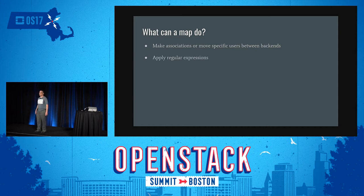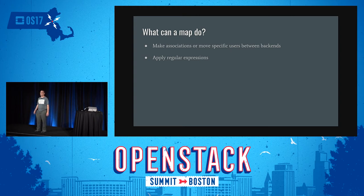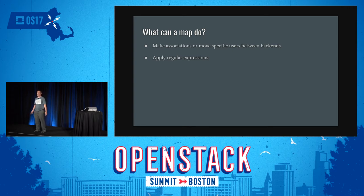The next thing a map can do is regular expressions. Basically, if you want to check — especially if you're doing things with user agents or very complex URL matches — you can apply regular expressions in a map file and have it output values. If you're using the Enterprise Edition fingerprinting module, this is very useful because you can classify users that way.